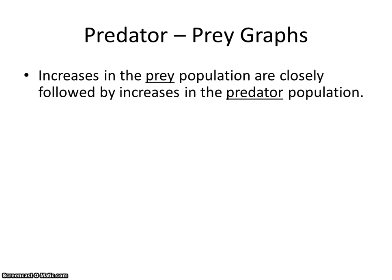Increases in the prey population are closely followed by increases in the predator population. We're going to be looking at wolves and moose. If there's a whole bunch of moose around, then eventually there's going to be an increase in wolves because there's more food for them to eat. They're going to be satisfied, and therefore they're going to be able to reproduce and further their population.